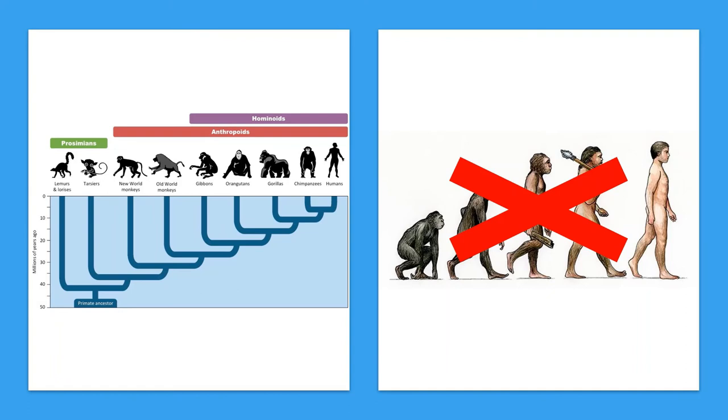We share a primate common ancestor, but no monkeys or gorillas or whatever did not turn into other species. It's, again, a branching effect.